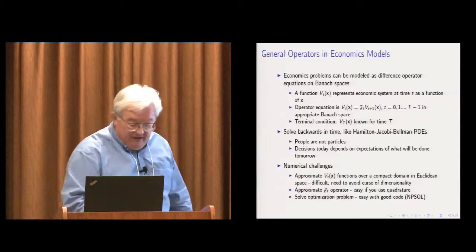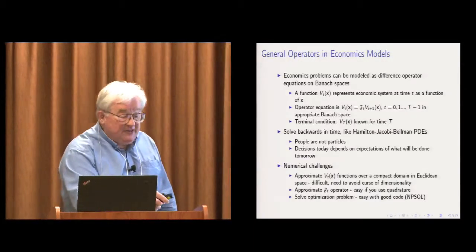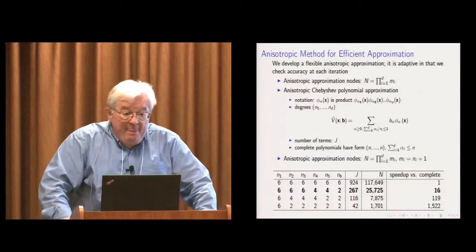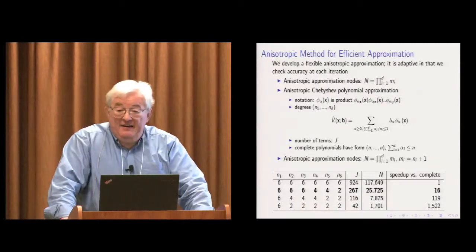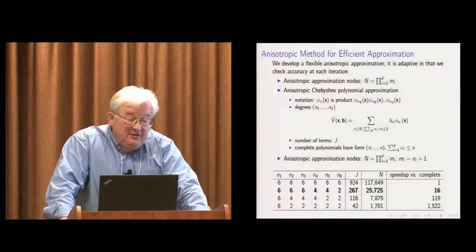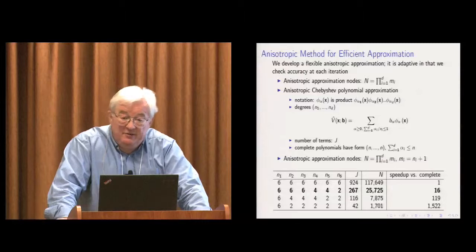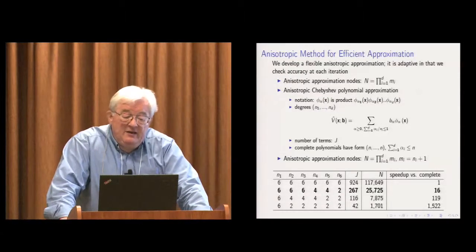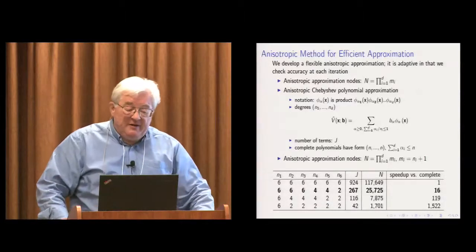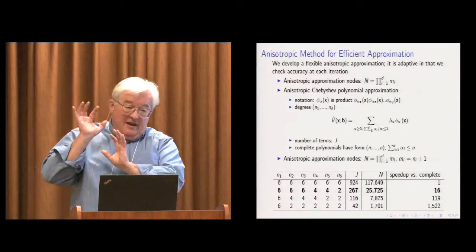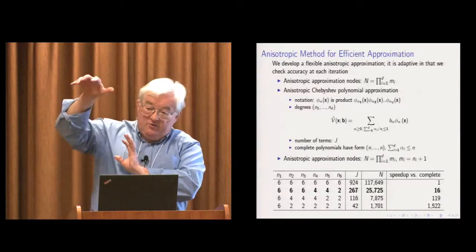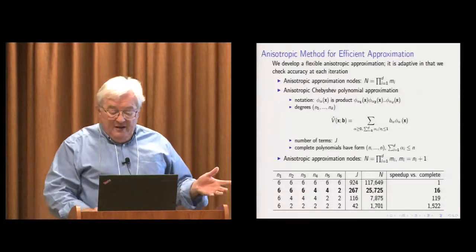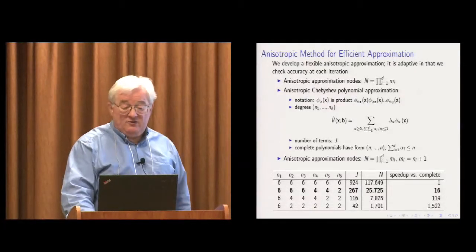There is a big numerical challenge: these functions are multidimensional. You have to approximate multidimensional functions efficiently, and that's where things get bad. If you just take normal approximation methods — tensor products, complete polynomials — the curse of dimensionality just grows. So we created an anisotropic approximation method where you have high-order polynomials in directions where you have high curvature, but in dimensions where there's lower curvature you use less. That results in significant speedup in our ability to solve this problem.